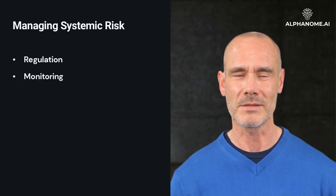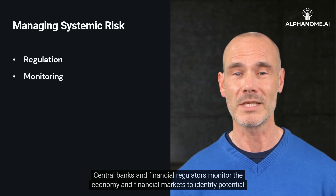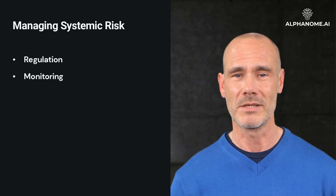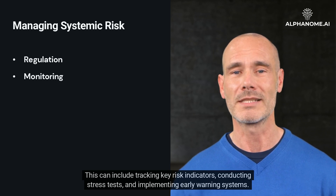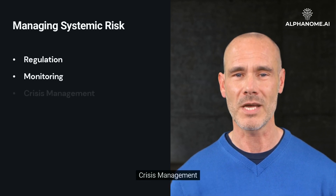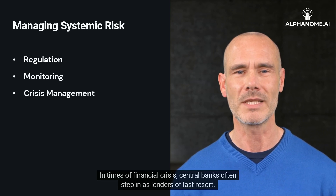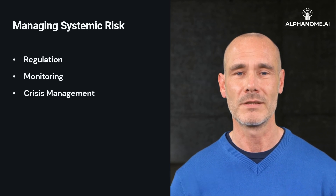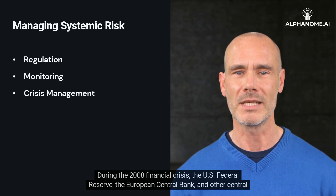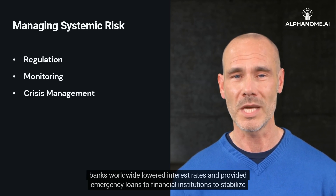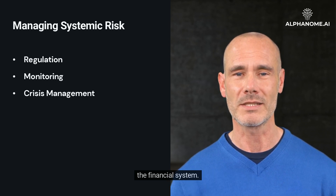Central banks and financial regulators also monitor the economy and financial markets to identify potential systemic risks. This can include tracking key risk indicators, conducting stress tests, and implementing early warning systems. In times of financial crisis, central banks often step in as lenders of last resort. During the 2008 financial crisis, the US Federal Reserve, the European Central Bank, and other central banks worldwide lowered interest rates and provided emergency loans to financial institutions to stabilize the financial system.